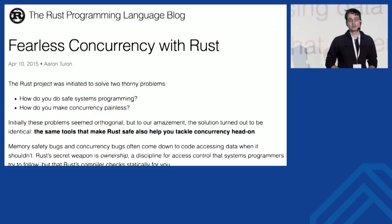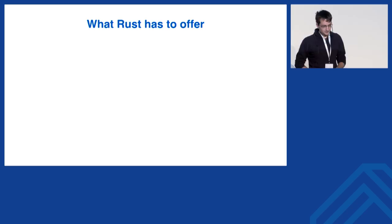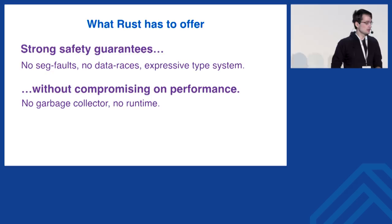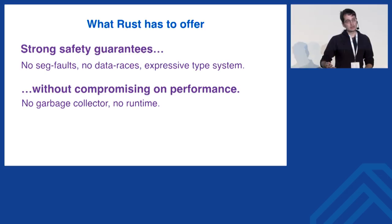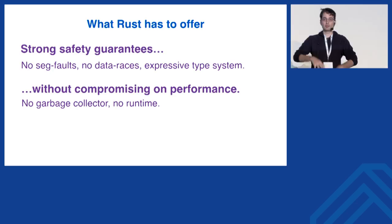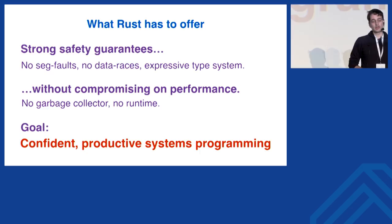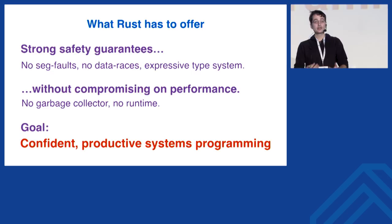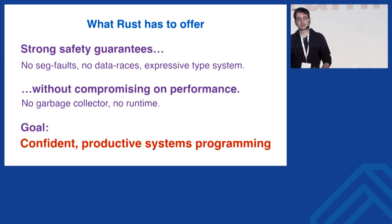Before we go much further, I want to give a brief overview of Rust. It provides strong safety guarantees — no segfaults, no data races — without compromising on performance. You get the same level of performance as C++, compiling down to machine code with raw access and no runtime. All of this comes together in this package of confident productive systems programming. The systems aspect is similar to C++, but the safety gives you the confidence to be more productive, as demonstrated by the Gecko bug, which has now actually been solved.